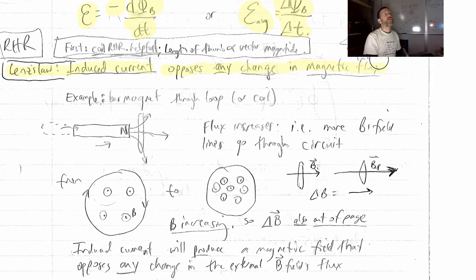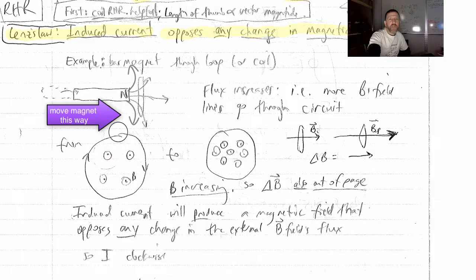EMF does nothing for you unless you have what present? A conductor. Then it will create current. So a changing magnetic flux just doing this does create an electric field, and it does create an EMF. It only creates a current if there's a conductor there.